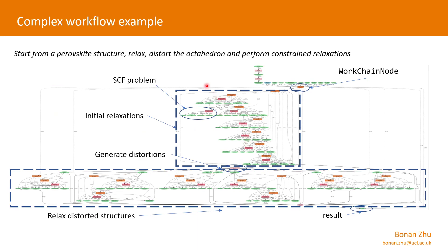Here is a more complex example of a specific workflow. Starting from a probe structure, I do a relaxation, distort the octahedron, and perform constrained relaxations. The work chain node controlling the whole process first does the initial relaxation — it ran into an SCF problem, but the base work chain recovered and carried on. Finally, it generated the relaxed structure, which was used as input for generating different distortions. These distortions are then relaxed further by separate relaxation work chains, all done in parallel.